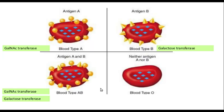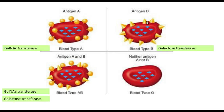If the enzyme is N-acetyl-galactose transferase, the RBCs will have the H antigen, and some of the H antigens get converted to the A antigen. So these RBCs express the H antigen and the A antigen. Similarly, if the enzyme is galactose transferase, some of the H antigen gets converted to the B antigen, so a person with blood group B will express H antigens and B antigens.